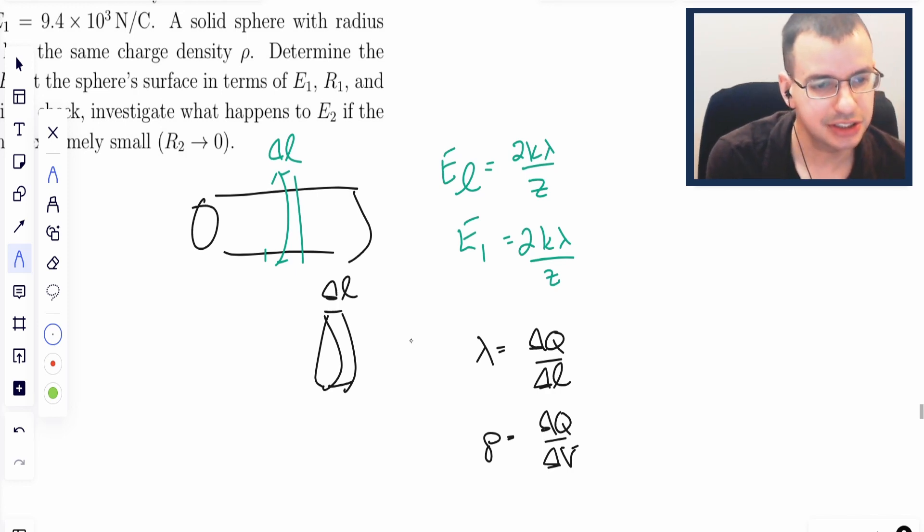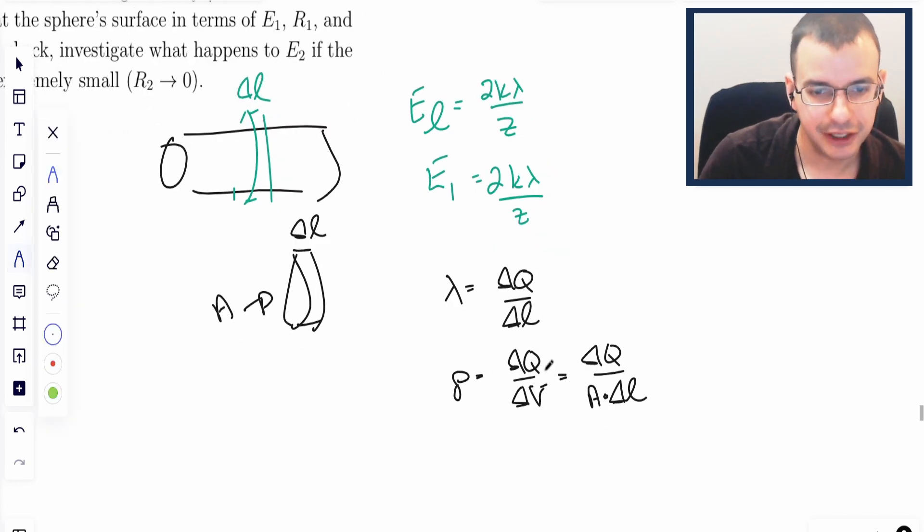The volume of this cylinder is going to be the area times the length. So I can rewrite this as delta Q over area times delta L. A little bit of area times delta L gives us volume. And since this is a circle, it's pi R squared.